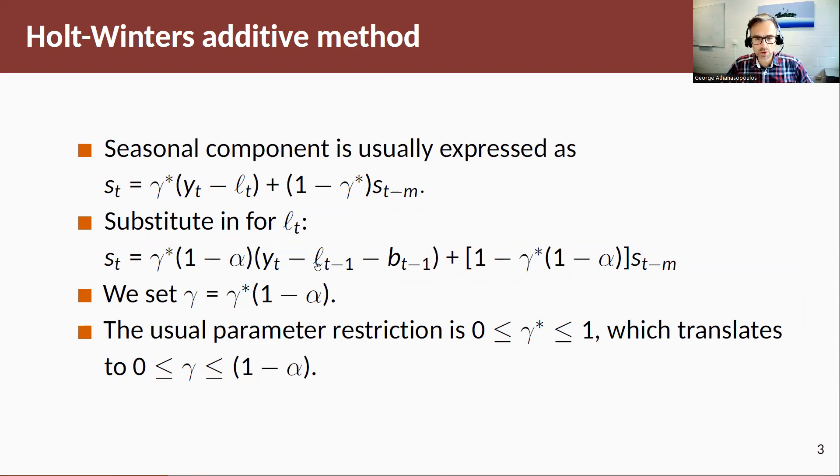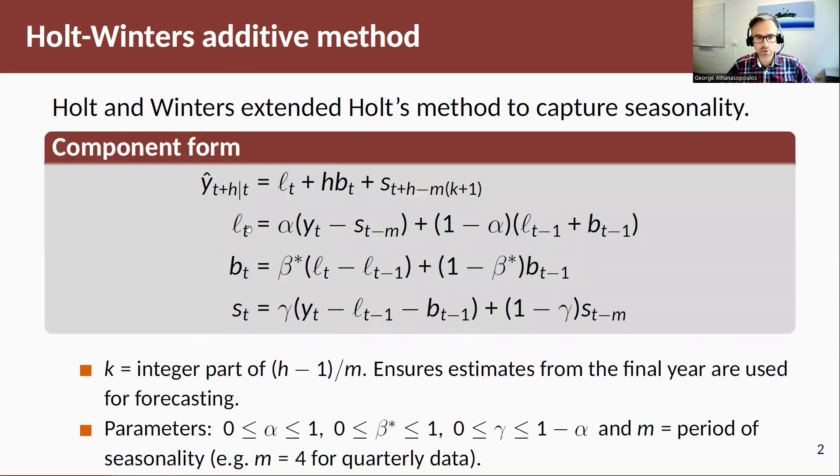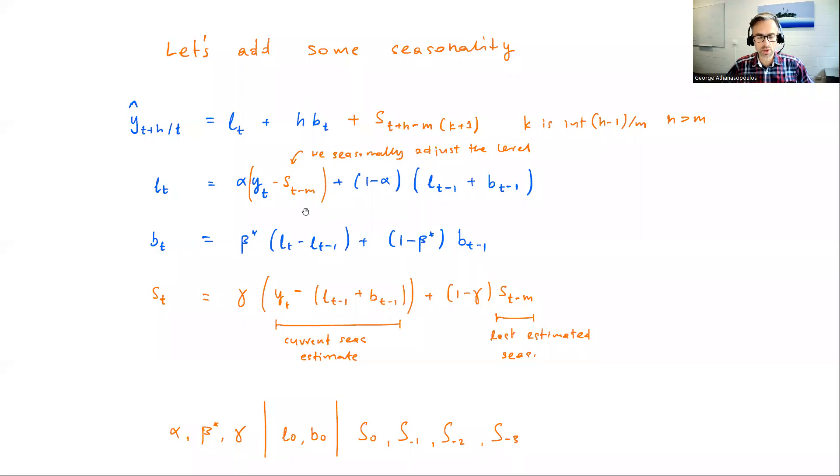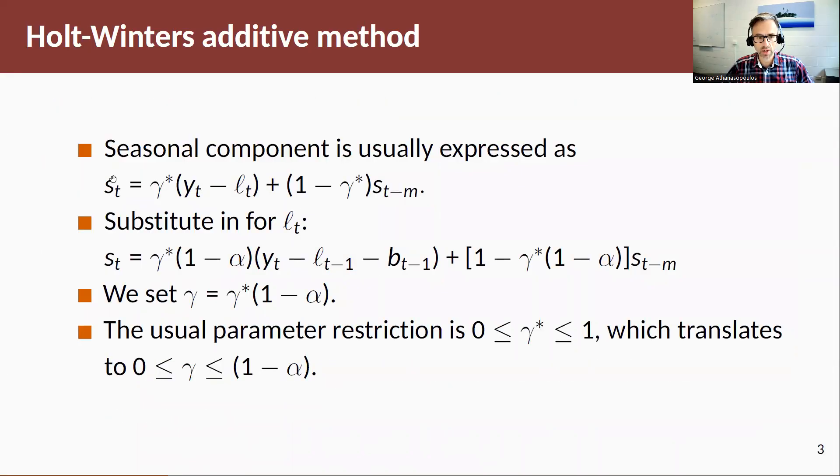Now, the reason we do this, as you'll see in later section of the book, is that it helps us conveniently write these states as part or as a function of past states, rather than in this original equation where ST is a function of a current state, LT. And you'll see where that comes handy in subsequent section of the textbook when we start talking about models that we build underlying these exponential smoothing methods.